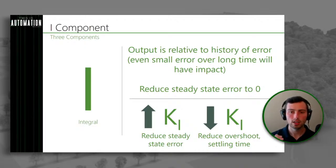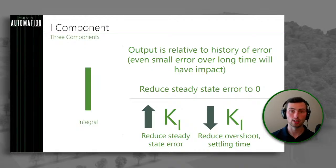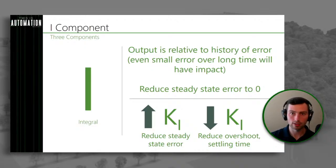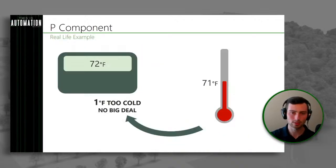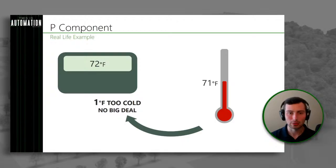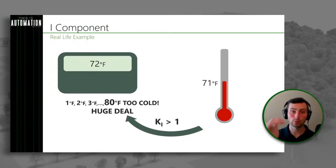If we increase our KI, that's going to reduce our steady state error. But you can have some overshoot introduced by that, and also a longer settling time. As you increase your integral gain, you may get overshoot right around your set point, so in some cases you may want to bring it back down if those phenomena are becoming more prevalent. In our example, the thermostat is set to 72 degrees Fahrenheit and it's actually 71 degrees. If we just have the P component, it's probably not going to do much — it's saying it's one degree too cold, not a big deal.